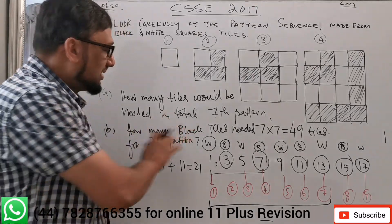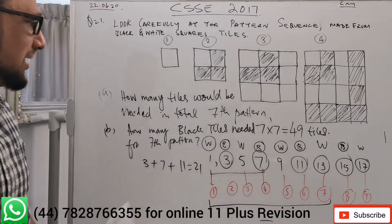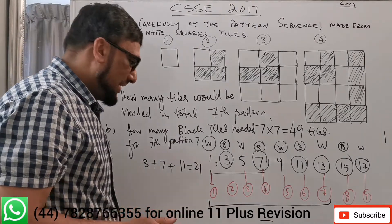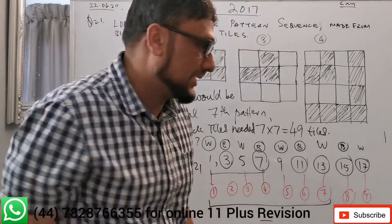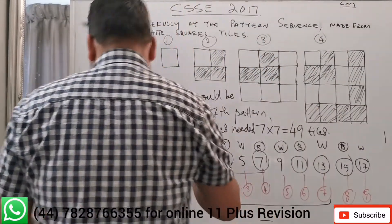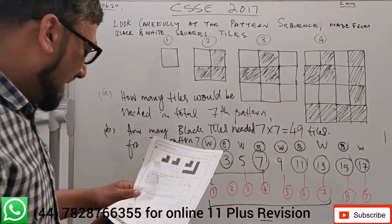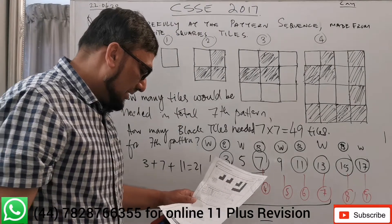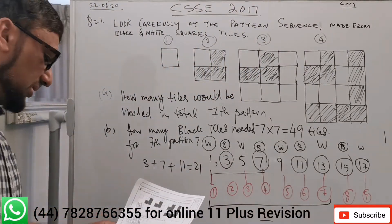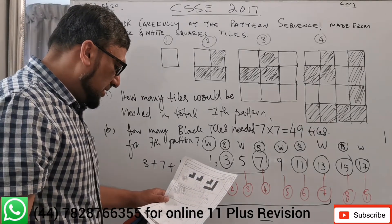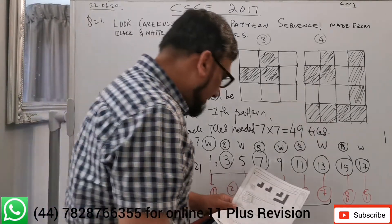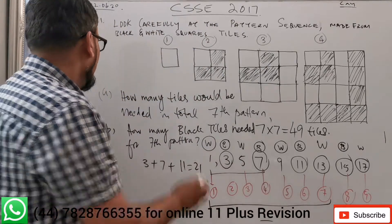That's the answer for part B. Now moving on to part C. Part C states that the ninth pattern in the sequence has 36 black tiles. Which other pattern in the sequence also uses exactly 36 black tiles?